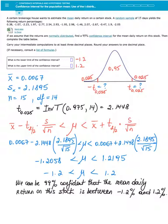If we assume that the returns are normally distributed, find a 95% confidence interval for the mean daily return on this stock. Then complete the table below. Carry the intermediate computations to at least three decimal places and round your answers to one decimal place. First, I recommend that we always get a visual for the information provided.